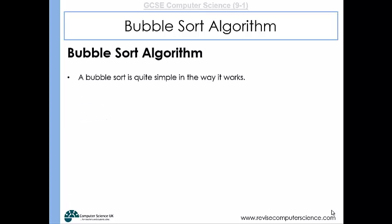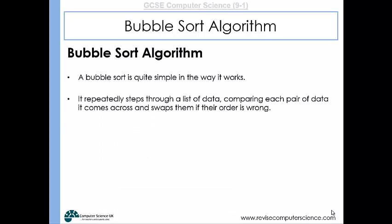The bubble sort is very straightforward in how it works. It just steps through a list of data comparing each pair of data that it comes across and swaps them if they're in the wrong order.